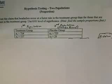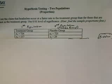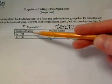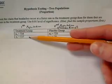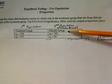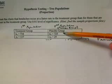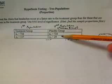In this example, we're going to do a hypothesis test of two populations for a proportion. The question says to test the claim that headaches occur at a faster rate in the treatment group than for those not in the treatment group, using a 0.01 level of significance. In the first population, the treatment group, the sample size is 734 people, and 117 of those had a headache. In the second population, the placebo group, there were 725 people, and 29 of those had a headache.